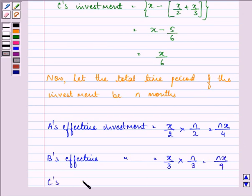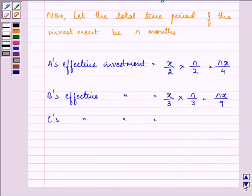And C's effective investment will be the rest of the capital that we have found out as X by 6 for the whole period. So, it is NX by 6.